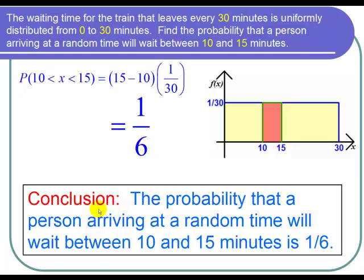So in conclusion, the probability that a person arriving at a random time will wait between 10 and 15 minutes is 1 sixth. And I'm done with the problem.